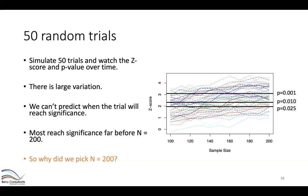What we observe from this graph: there's large variation — not all trials behave the same way. Some start with a very low z-score that increases over time, like this red line that wasn't significant early but crossed the 0.025 threshold by the end. Other trials were highly significant early and stayed that way. At the beginning we don't know which path our trial will take, but most of these trials reach significance far before 200.